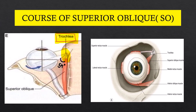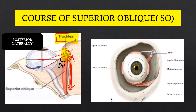The superior oblique, after arising from the sphenoid bone, travels parallel to the medial rectus, or parallel to the medial wall of the orbit. It then encounters the trochlea — a pulley present at the superior medial aspect of the orbit — passes through the trochlea, and gets inserted in the posterior aspect of the eye, posterior to the equator, below the superior rectus muscle.